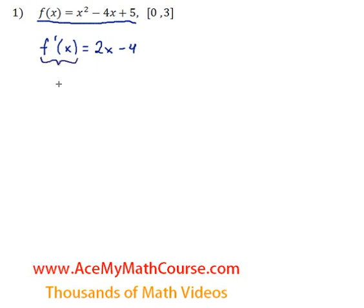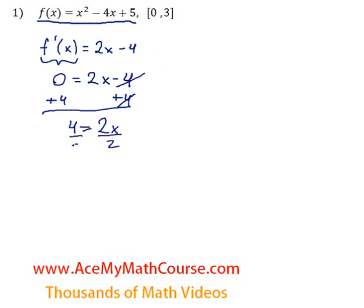Now we can set f prime of x equal to 0. We can add 4 to both sides of the equation. And 4 is equal to 2x. Then we divide both sides by 2, and x is going to be equal to 2.